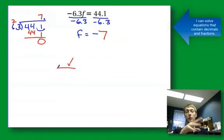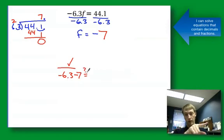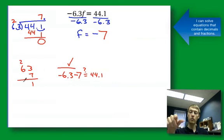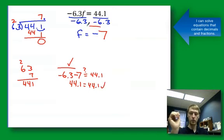Plug that into your check step. I'm going to be multiplying decimals now. So -6.3 times -7 equals 44.1. Let's see if it works. I have a negative times a negative, so I know I have the right sign on my answer. So I want my answer to be positive. Now I'm just going to do 63 times 7 and I get 441. And notice my answer should have one decimal place. So it's 44.1 equals 44.1. That's the correct solution.